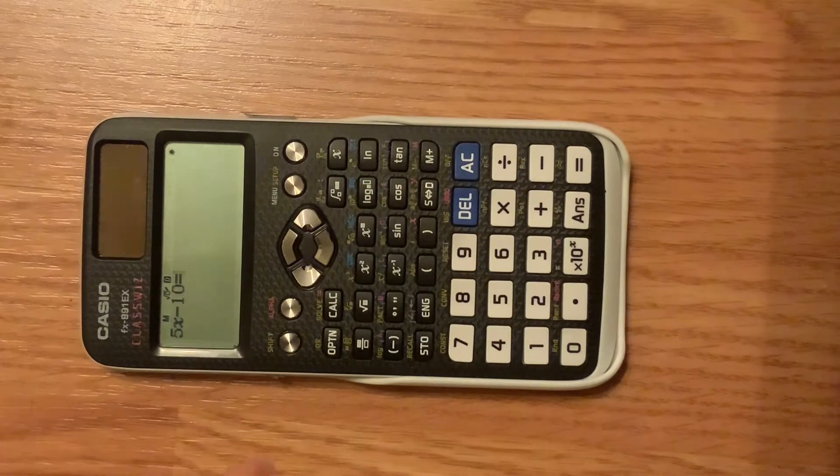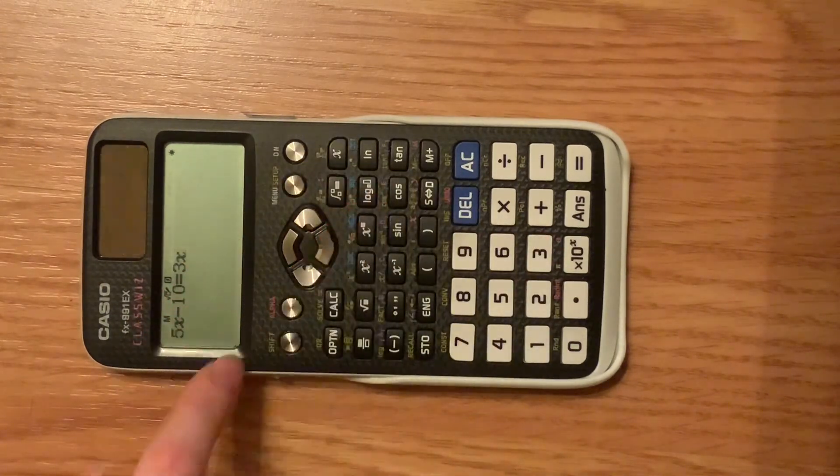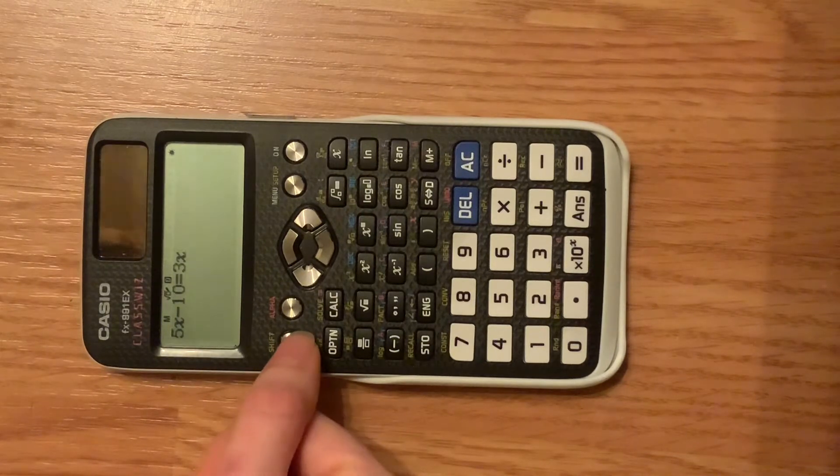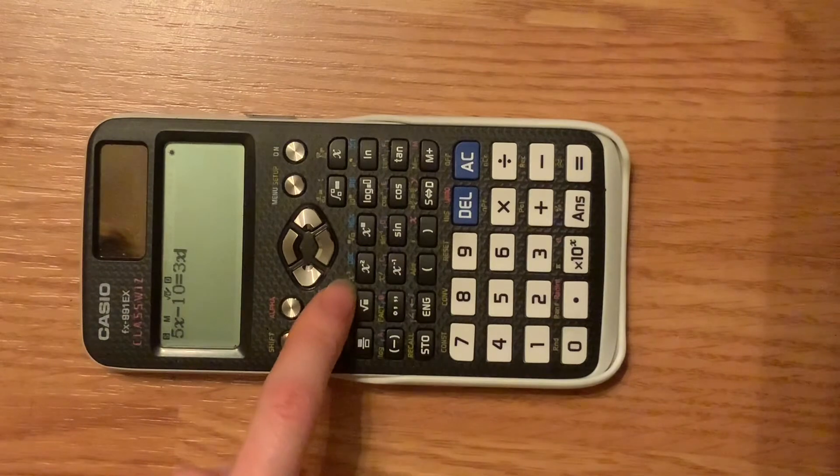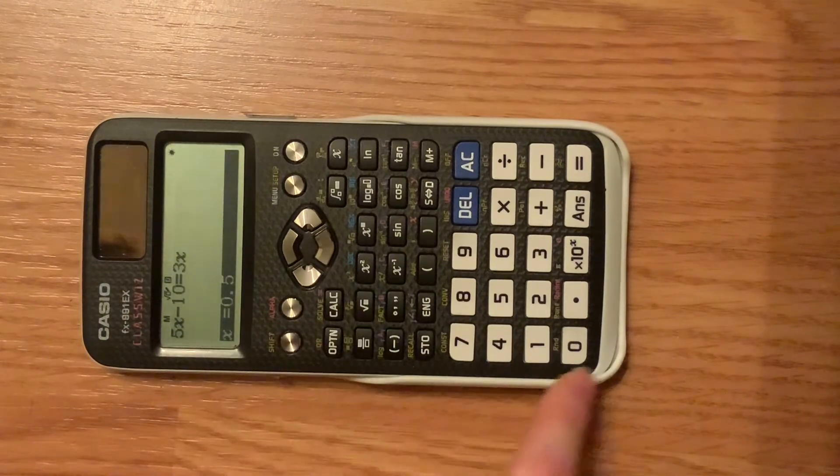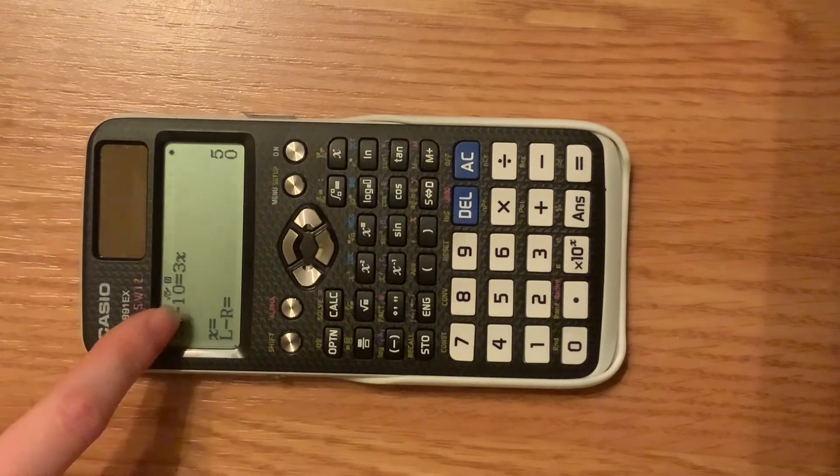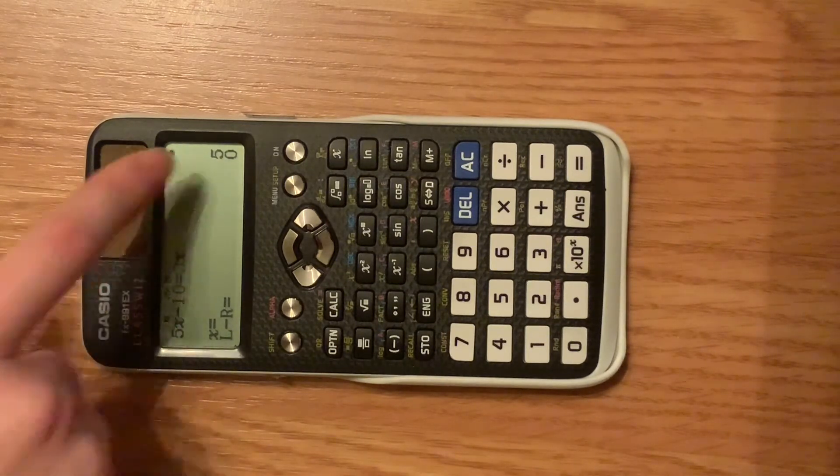Then you're going to put in the other half of your equation. And to get your answer, you're going to push shift calc for solve, and then you hit this equal sign, and it'll give you your variable. In this case, x equals 5.